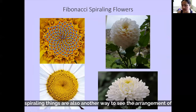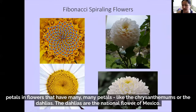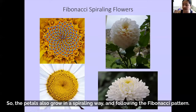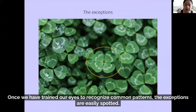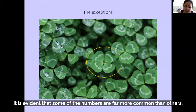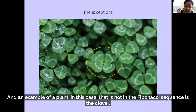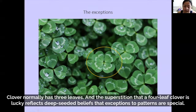These same spiraling arrangements are another way to see the petal arrangement in flowers that have many, many petals, like chrysanthemums or dahlias. The dahlia is the national flower of Mexico — the petals also grow in a spiraling way following the Fibonacci pattern. Once we have trained our eyes to recognize common patterns, the exceptions are easily noticed. An example of a plant not in the Fibonacci sequence is the clover — it normally has three leaves, and the superstition about a four-leaf clover reflects a deep-seated belief that exceptions to patterns are special.